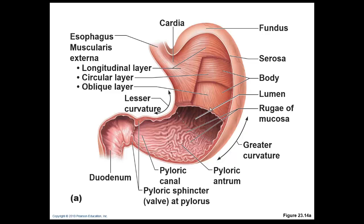Looking at the layers of the digestive tract: the mucosal layer is in contact with food and is made up of simple columnar epithelium for digestive processes and absorption. Next is the submucosa, where we find Peyer's patches. Then the muscular layer — three layers of smooth muscle in the stomach and two layers in the large and small intestine. The outer layer is the serosa, which is essentially the visceral peritoneum lining the outer wall of these digestive organs.